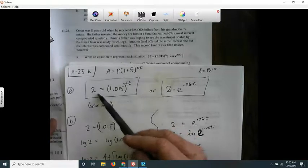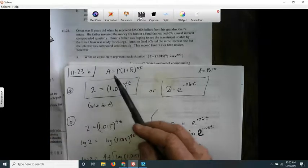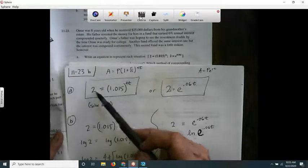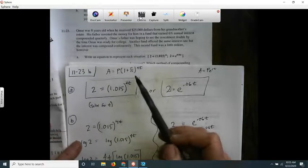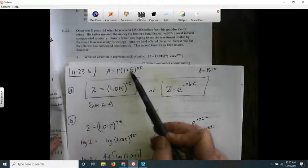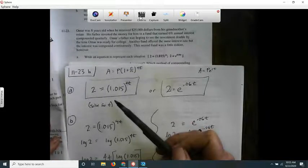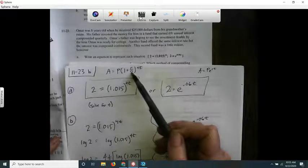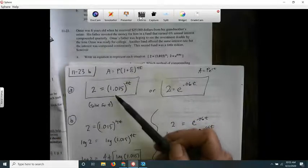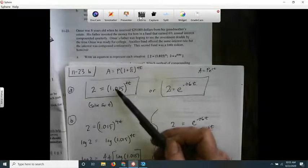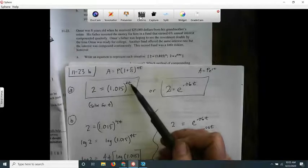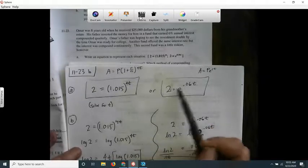That's why there's just the 2 there. This is 1 plus r over n—r was 0.06, and if you divide that by 4 because it's compounded quarterly, that's four times per year. That's where this 1 plus r over n comes from, and then n times t is 4 times t. This is what you got.